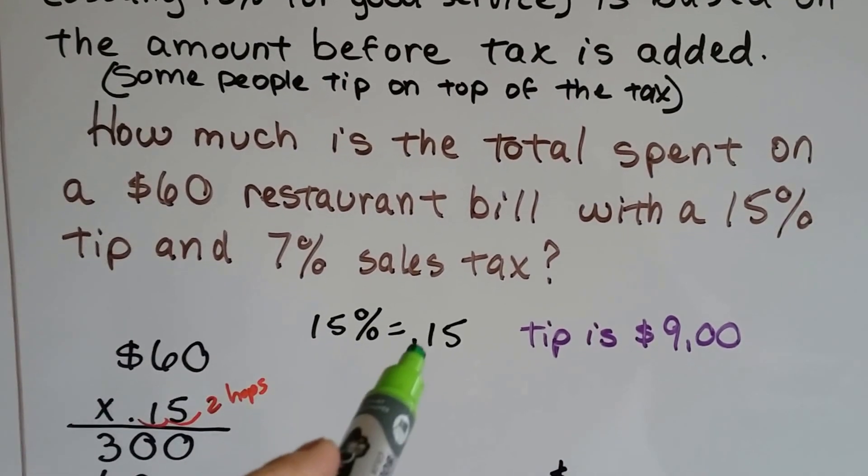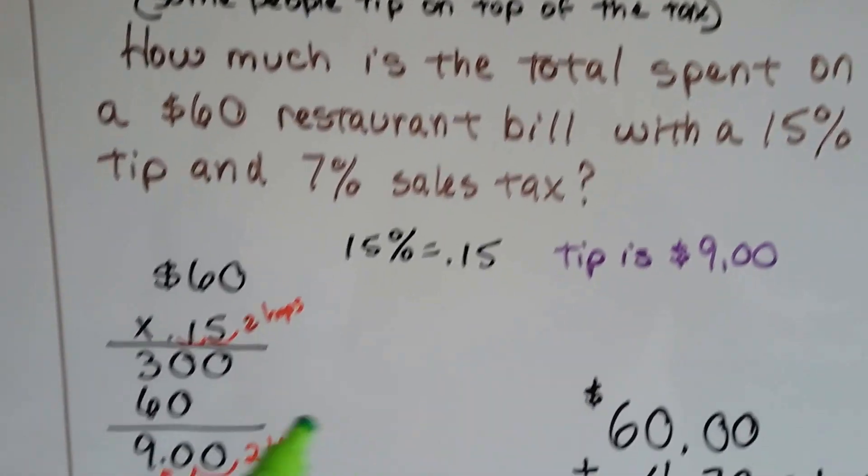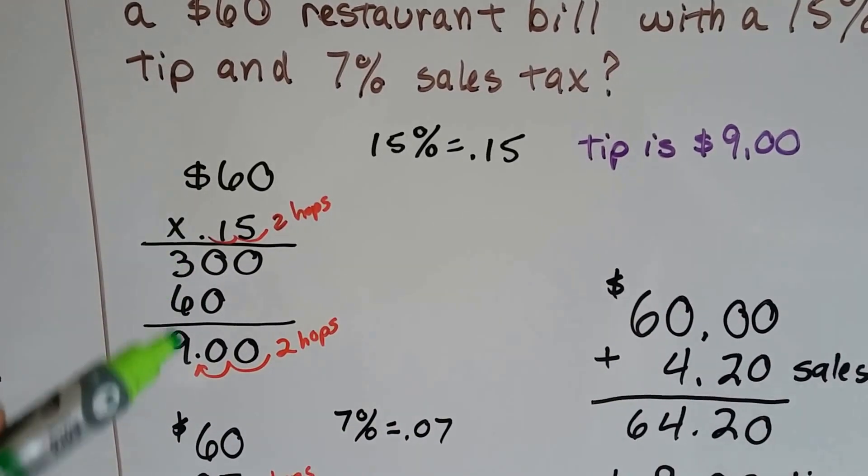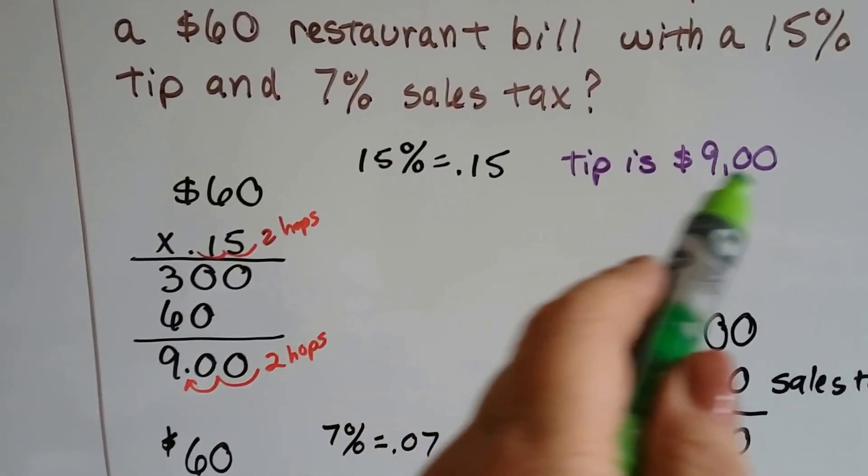So 15% is .15. We multiply the $60 times the .15 and we get $9. So the tip is $9.